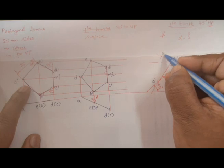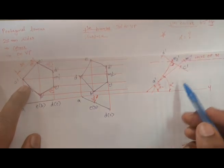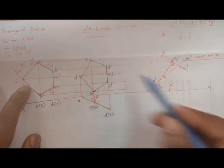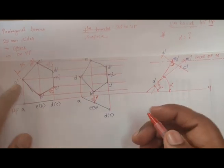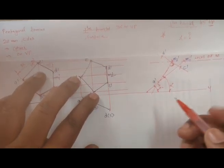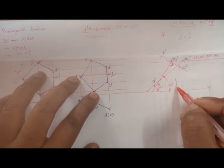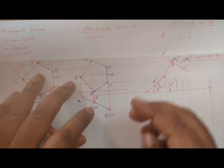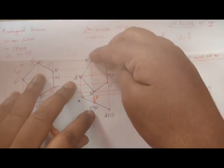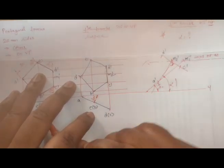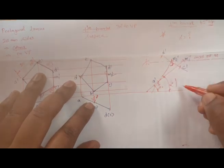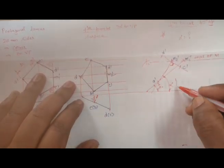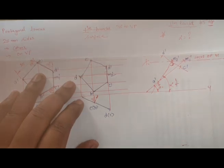I'll take the distance from the annotations E dash to D dash. Now, the distance from E dash to B dash will be equal to E dash to E dash. I'll take the compass, measure it, and cut an arc on this side as well as that side. Then I'll take the distance from D dash to E dash to get the intersection point, and similarly C dash to B dash will be equal. I'll cut an arc.